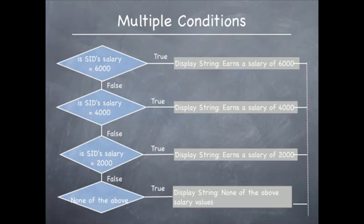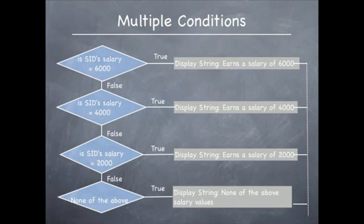Consider the flowchart displayed on this slide. It consists of many different checks which are being done with actions to perform for each type of check. We first begin by checking the first condition. The outcome of a condition can either be true or false. On this slide the first condition is: is SID's salary equal to 6000? If the answer is yes, the salary is 6000 — that is the outcome of the condition is true — the string to display is 'earns a salary of 6000'.